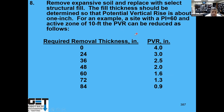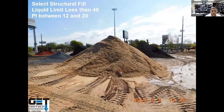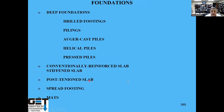You can remove the expansive soils and replace them with non-expansive soils. If you've got an active zone of 10 feet with soil PI of 60, you may have to remove 7 feet of expansive soils to get a PVR of about 1 inch. Most school districts want a PVR of about 1 inch. When you put select fill in there, the select fill should have a liquid limit less than 40 and a PI between 12 and 20. The types of foundations we use for school projects are deep foundations such as drilled piers, piling, auger cast piles, helical piles, and press piling. For maintenance buildings we use conventional reinforced slab or post-tension slab. You can use spread footings if you've got sandy soils, or mats.